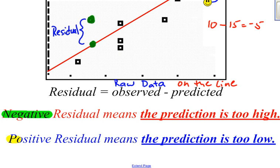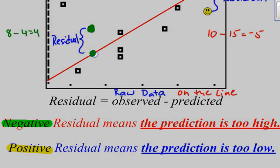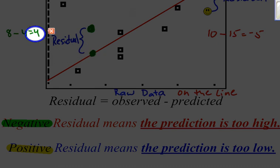A positive residual means that the prediction is too low. We can see that with the green points here. If the y value right here is 8 and this one down here is 4, 8 minus 4 is positive 4. So I have a positive residual, which means that my prediction on the line was too low. The predicted value was lower than the actual observed value.